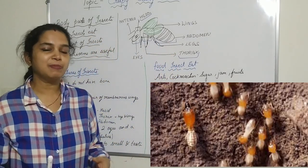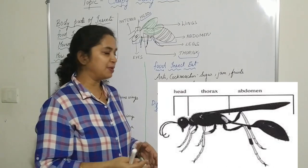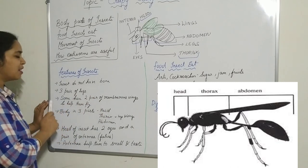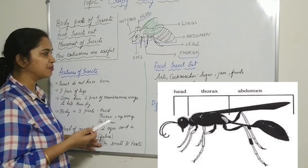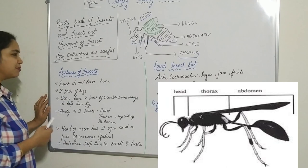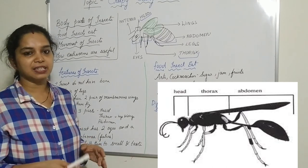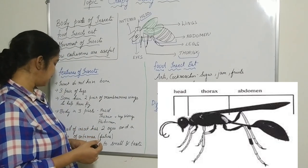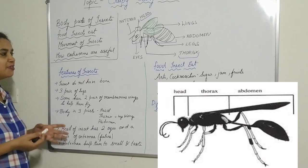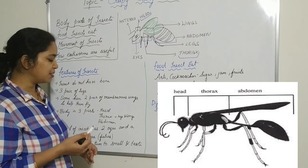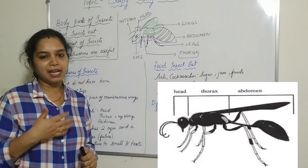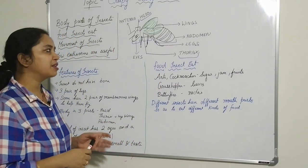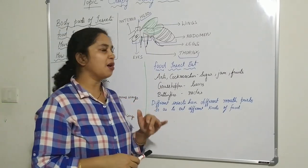The third body part is the abdomen — it is the lower part of the body. To recap the features of insects: insects do not have bones, they have three pairs of legs, some have two pairs of membranous wings to help them fly, the body is divided into three parts — head, thorax, and abdomen. The head has two eyes and a pair of antennae, or feelers, which help them smell and taste. The abdomen is the end of the body.